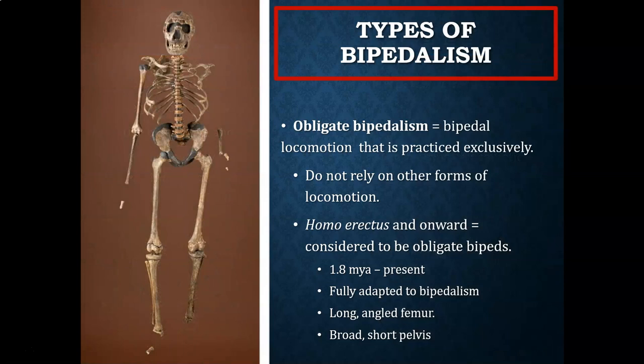The next type of bipedalism is obligate bipedalism, seen with Homo erectus and onward. Hominins dating from 6 million to about 3 million years ago are habitual bipeds, while those from 1.8 million years ago to present are obligate bipeds. Obligate bipedalism is bipedal locomotion practiced exclusively — obligate bipeds do not rely on other forms of locomotion.